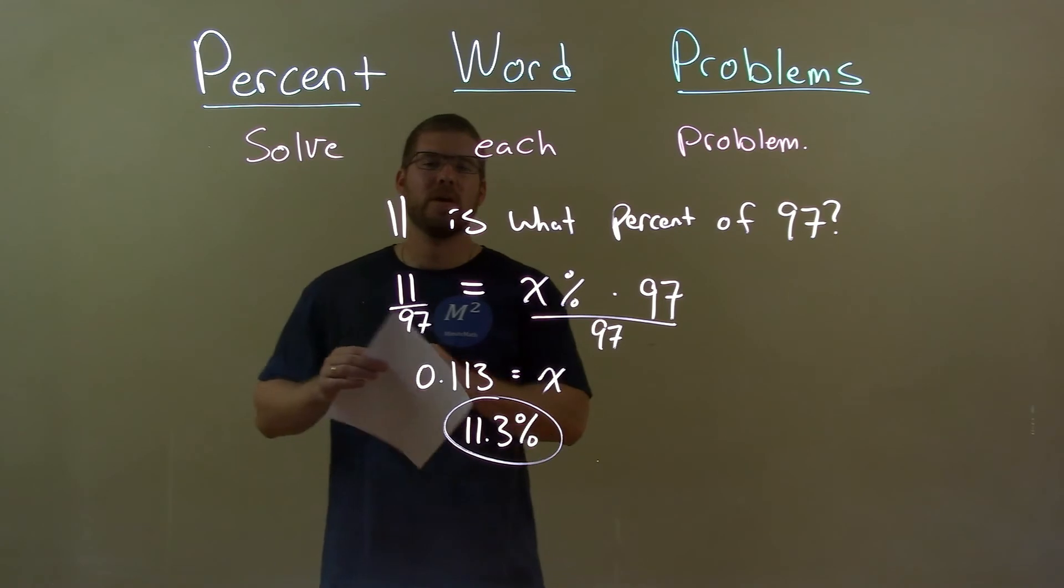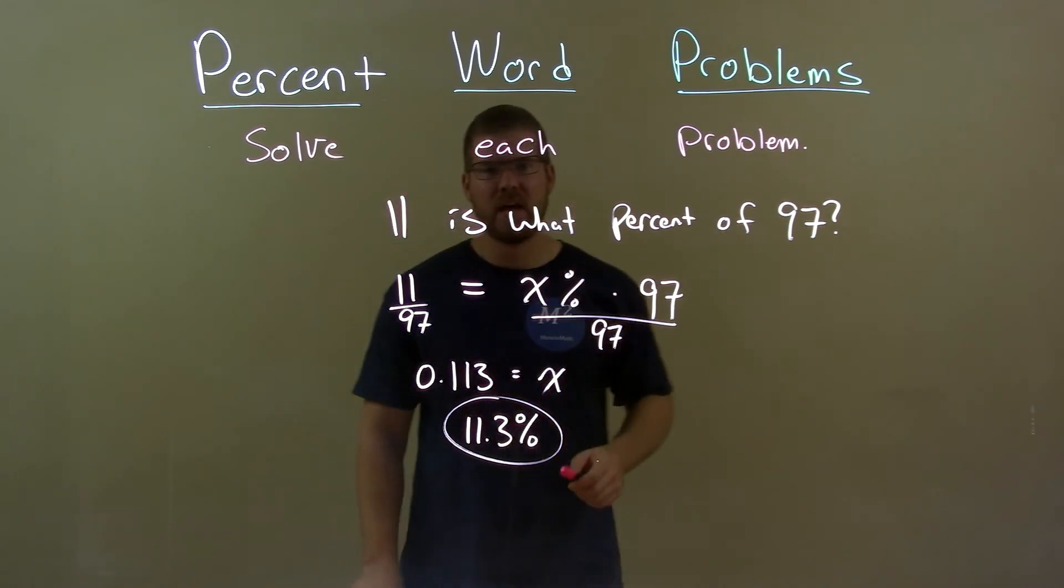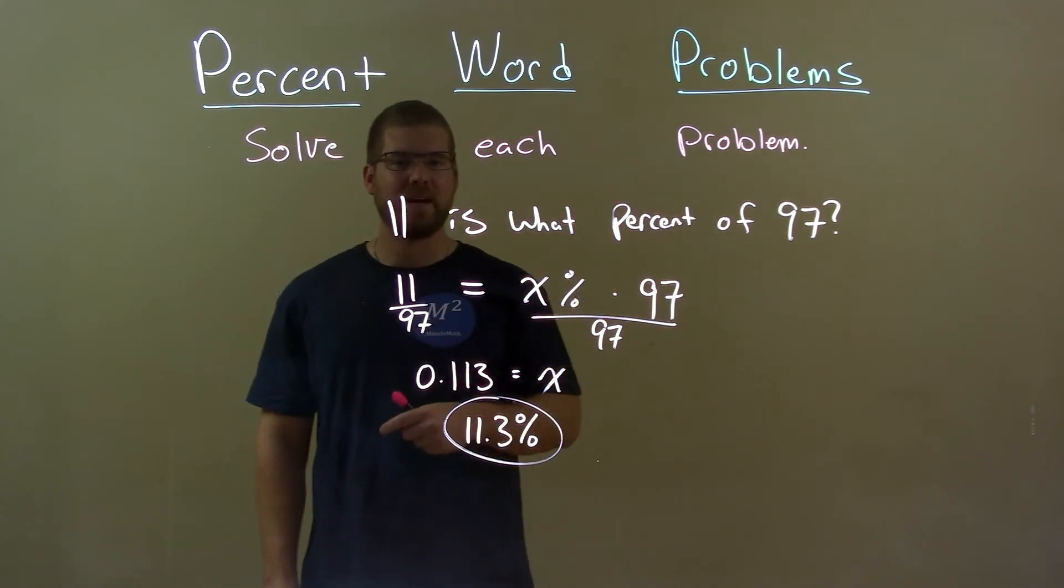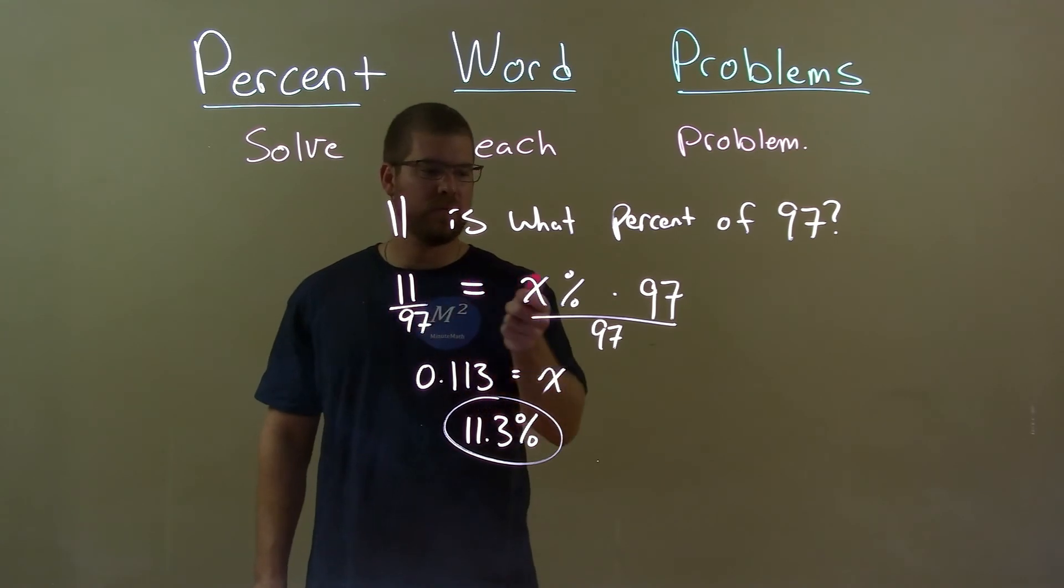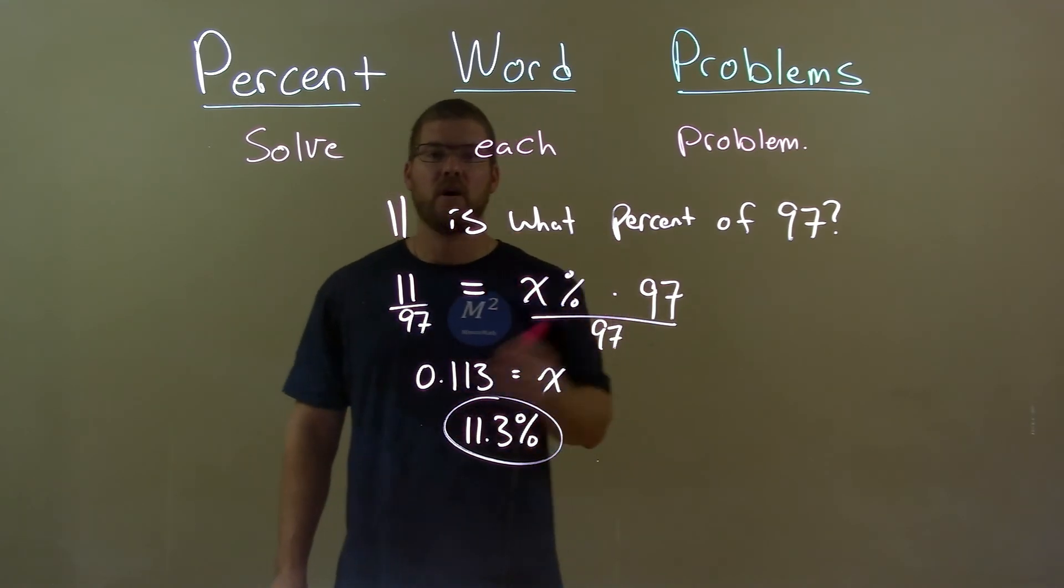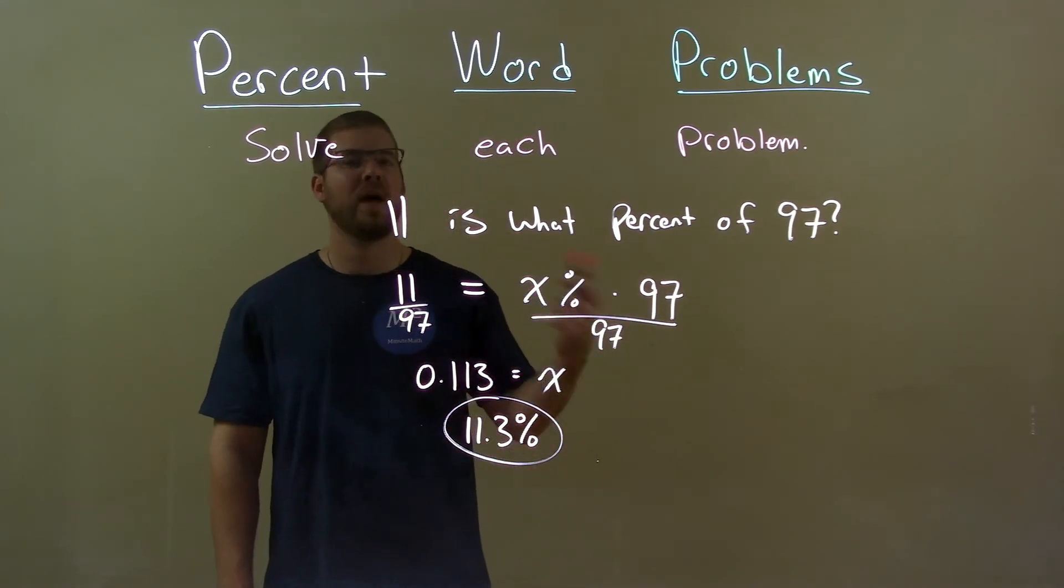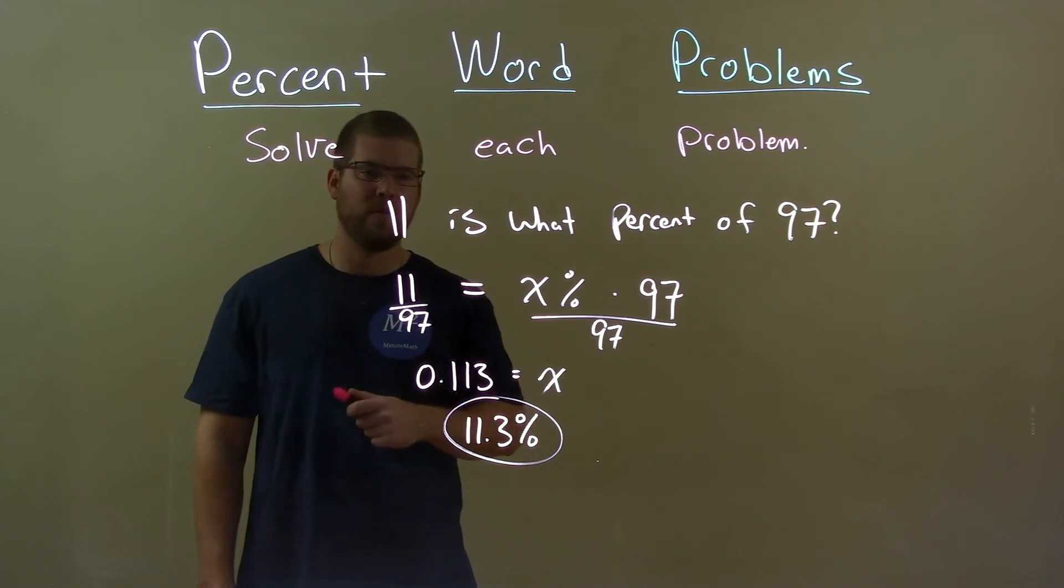Quick recap, we're given 11 is what percent of 97? We converted that to an equation, 11 equals x times 97, solve for x, got a decimal, converted that to a percent, and so I got our final answer as 11.3%.